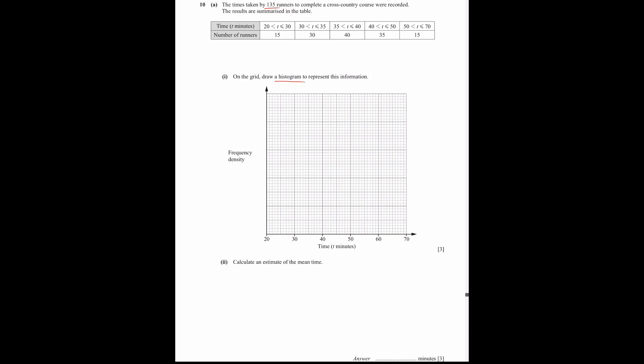If your class intervals are different sizes, for example, 20 to 30 size is 10, 30 to 35 class size is 5, 35 to 40 is 5, and then 10 and then 20.